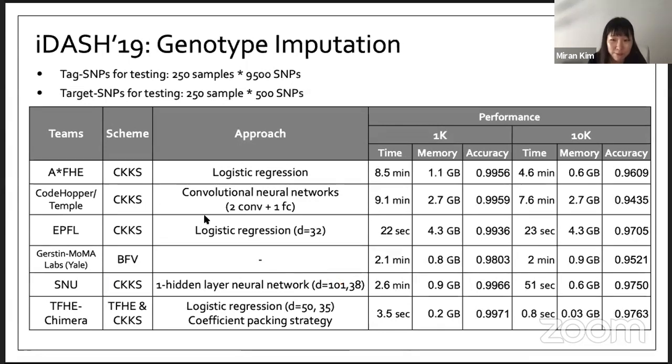Each team used different imputation models. For example, A-star and EPFL and TFH team adapted the logistic regression model, so they trained the model using logistic regression model, or some teams used convolutional neural network, a more complex model. Seoul National University used one hidden layer neural network model. Each team optimized their plain model while considering various numbers of the closest predictors. For example, some teams considered 100 closest predictors, and some teams used just 32 closest predictors.